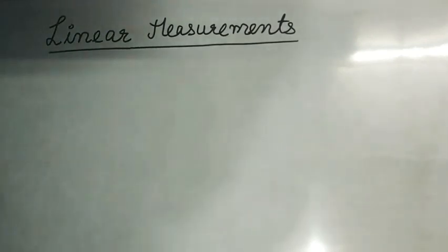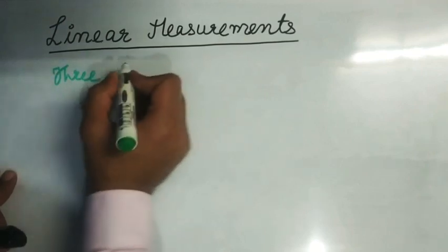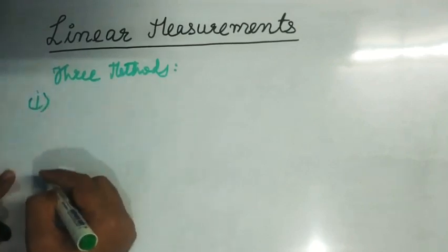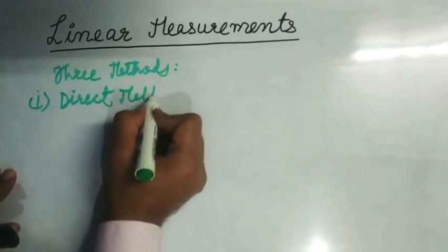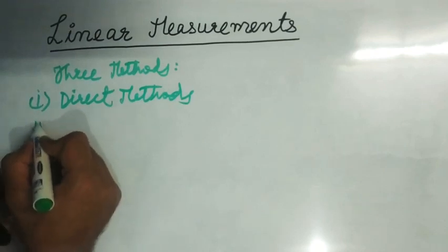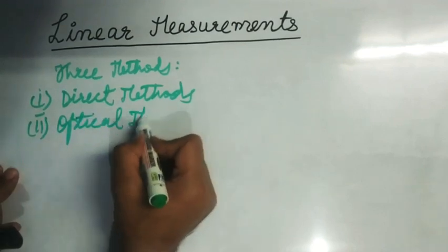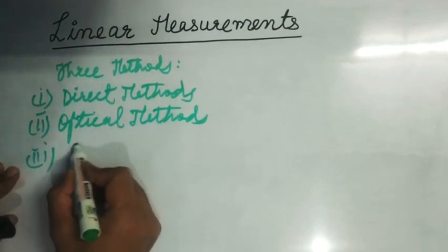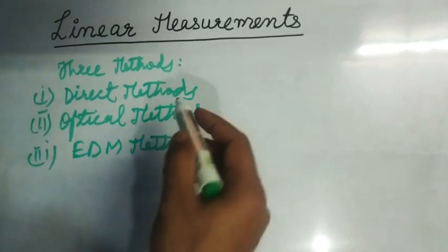Now coming to the methods of linear measurement. Generally there are three methods of making linear measurements. The first one is direct methods, the second is optical methods, and the third one is EDM methods. Now I will briefly explain each one.